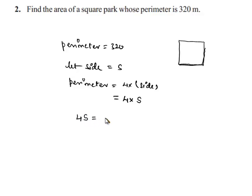So 4s will be equal to 320, and here s is equal to 320 by 4, that is equal to 80. So we got the side of the square as 80 meters.